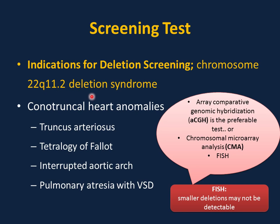Indications for deletion screening of chromosome 22q11 — this is very important to screen even with no classic presentation of DiGeorge syndrome. Any newborn presenting with conotruncal heart anomalies like truncus arteriosus, tetralogy of Fallot, interrupted aortic arch, or pulmonary atresia with VSD must be screened for chromosome 22q11 or DiGeorge deletion. The preferred test is array comparative genomic hybridization or chromosomal microarray analysis. The FISH test is widely available but has a limitation: smaller deletions may not be detectable. This is very important and very high yield on the pediatric board examination.